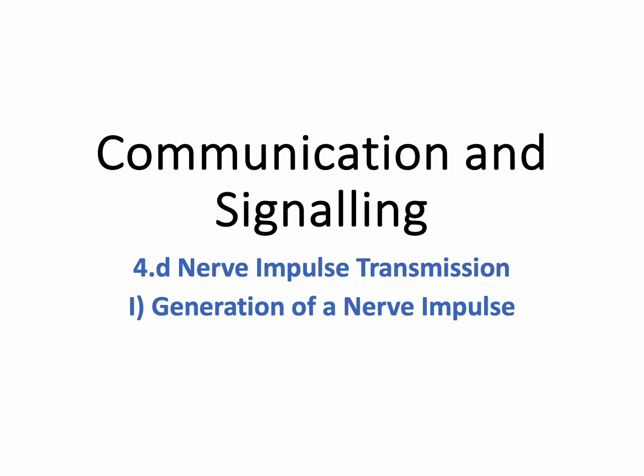Hi everyone and welcome back to Advanced Higher Biology. Today we're continuing with Unit 1, Cells and Proteins, the fourth key area, Communication and Signalling, and we are nearly finished it. We're on to Part D, Nerve Impulse Transmission.